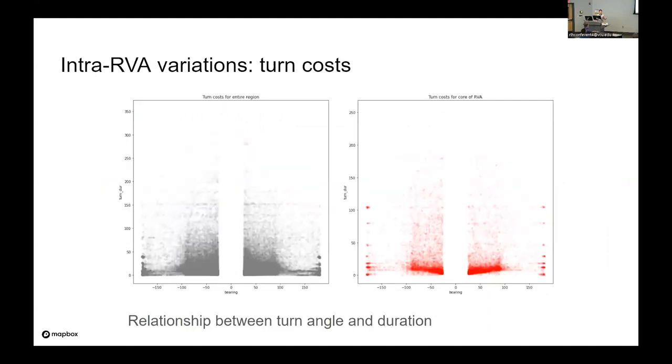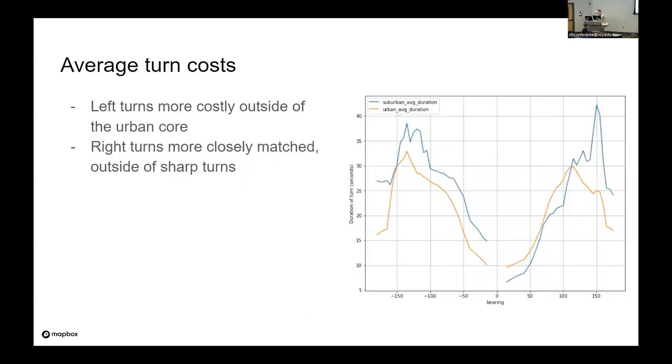And when we do this, you can start to see different distributions. So along the x-axis, you see the bearing moving from zero to 180 for right-hand turns and zero to negative 180 for left-hand turns. And you can see that there's a tighter distribution within the urban area. And that's likely a reflection of the more normalized grid network compared to the broader region, which is composed of a more diverse set of road classifications, everything from motorways and trunks to freeways to things that you would also find in the urban core.